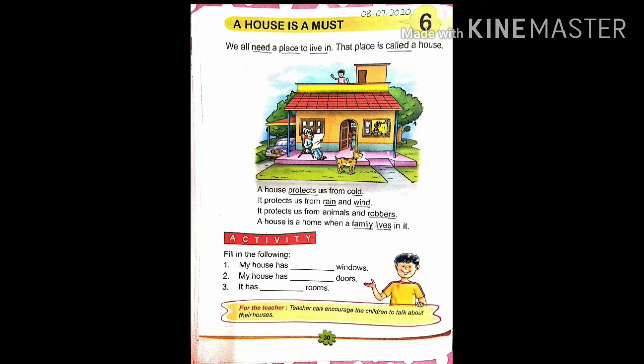Now there is an activity for you. As you can see on your screen, there is an activity — fill in the following. There are three fill-ups you need to complete. My house has dash windows. You will count how many windows are in your house. My house has dash doors. Doors means door. You need to count how many doors are in your house.